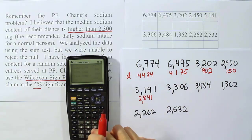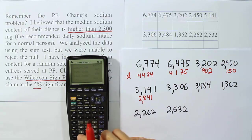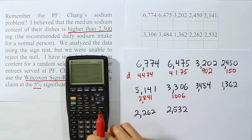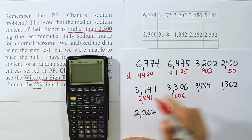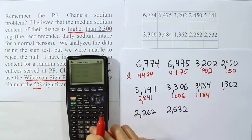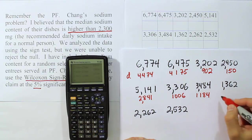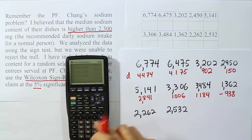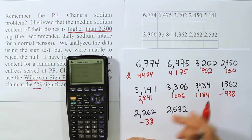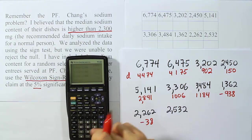Then I'll have 3306 minus 2300, I get 1006. Then 3484 minus 2300, I get 1184. Then 1362 minus 2300, I get negative 938. Then 2262 minus 2300, I get negative 38.